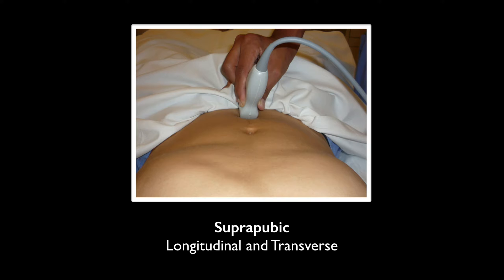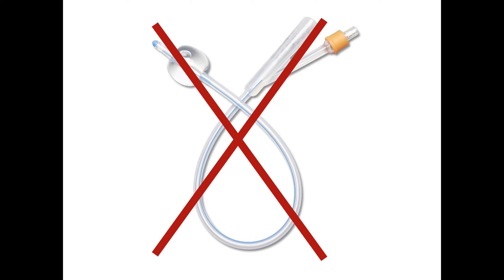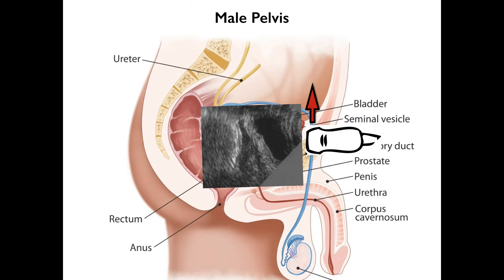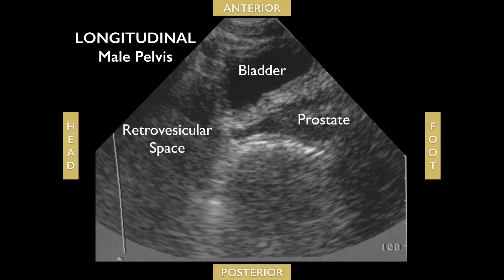For the pelvic view, go to the suprapubic area in either longitudinal or transverse views, with indicators towards the head and the right respectively. Make sure the patient has a full bladder and try to perform the exam before placing a Foley to ensure a good acoustic window. For a male pelvis, the two structures to identify are the bladder and the prostate.